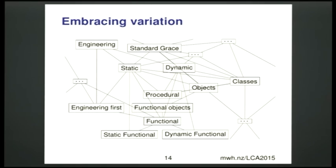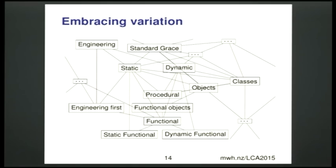We try to embrace variation with a giant lattice of different dialects. You can start out in many different places — variables or no variables, types or no types — and zigzag through all the different dialects available. You start out with straight-line code, then add loops, then types, then something else. Ultimately, everyone ends up in the same standard unrestricted language, or they've gone beyond it — for example, a software-engineering-first approach with preconditions, postconditions, and loop invariants everywhere.